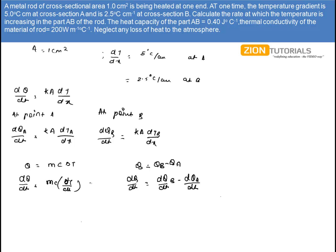Substituting these expressions, we have MC·(dT/dt) equals K·A·(dT_A/dx minus dT_B/dx). This is our working equation to find the rate of temperature increase in part AB.